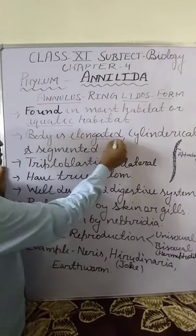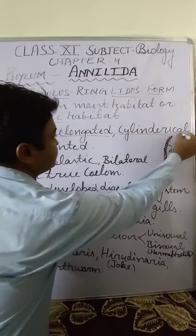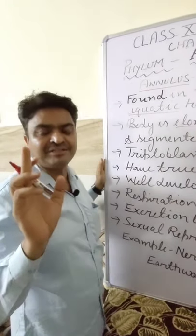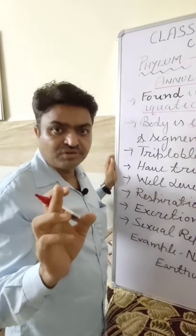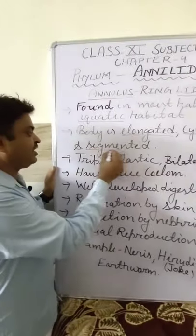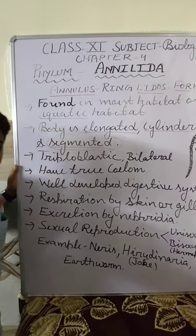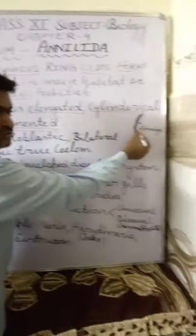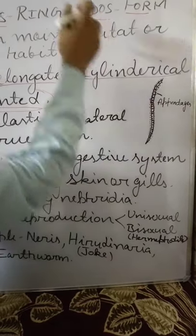Their body is elongated, means they have more length than breadth. With this, their body is cylindrical. Why are they cylindrical? Because they have the triploblastic germinal layers — ectoderm, mesoderm, and endoderm are found in them. And their body is segmented. It is the most important characteristic that they have. Segments are found in their body, and due to that they are known as annelids.